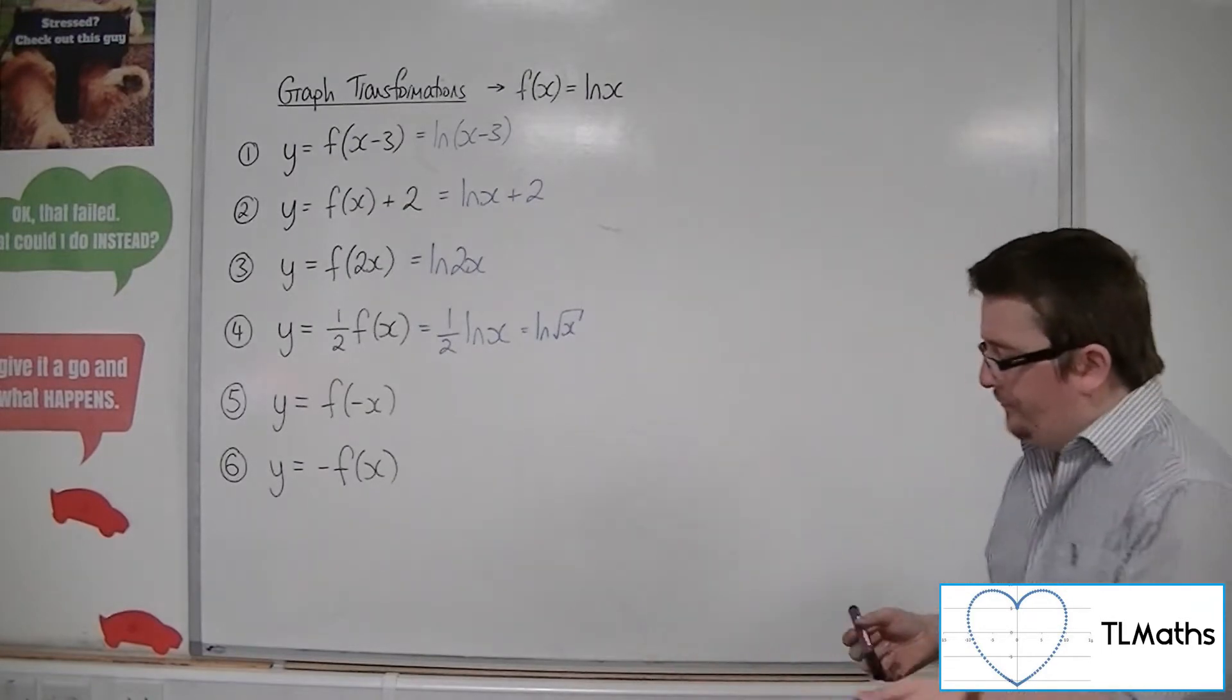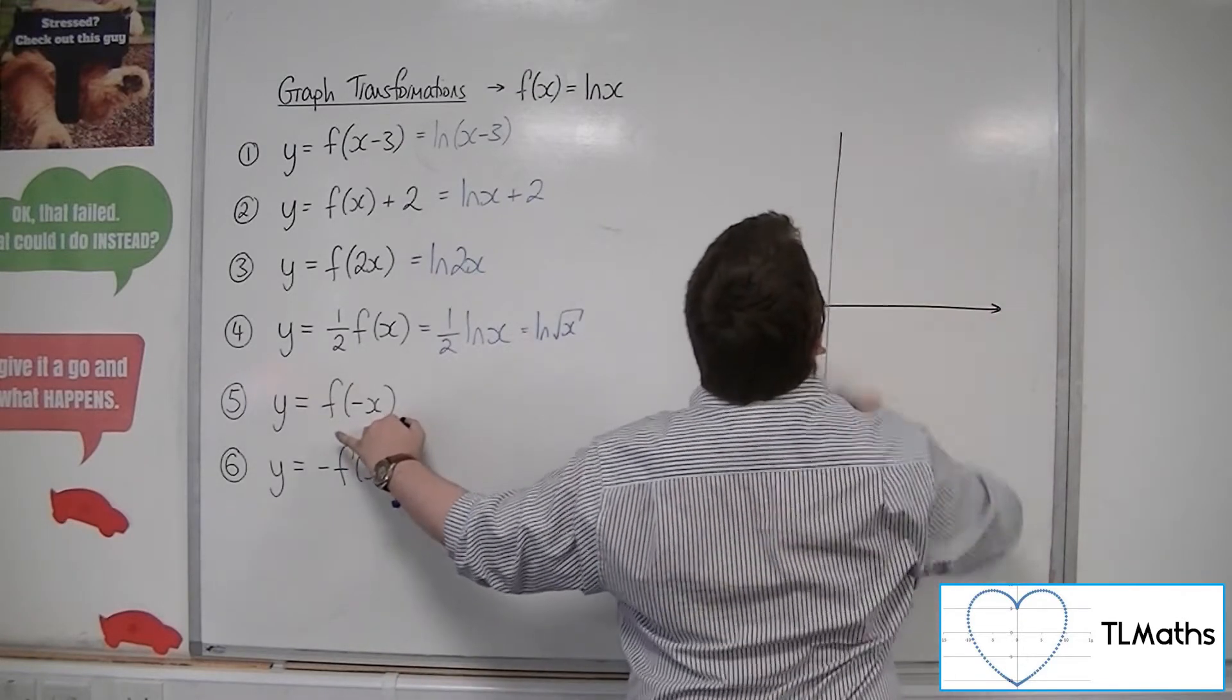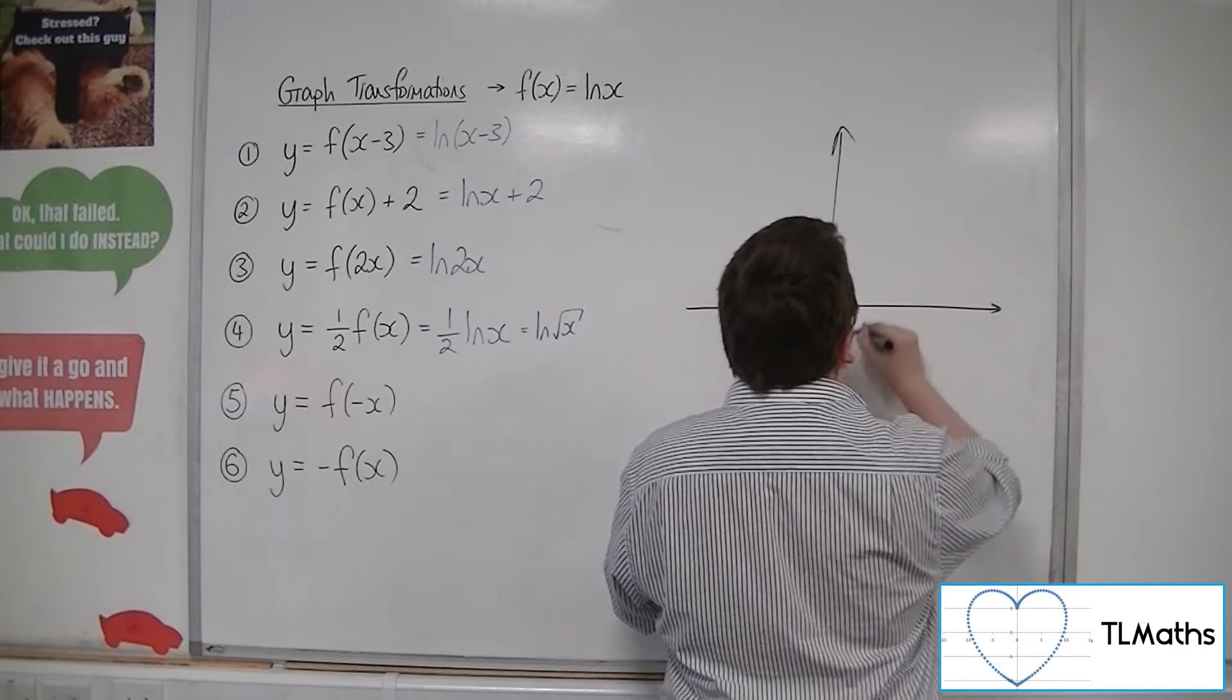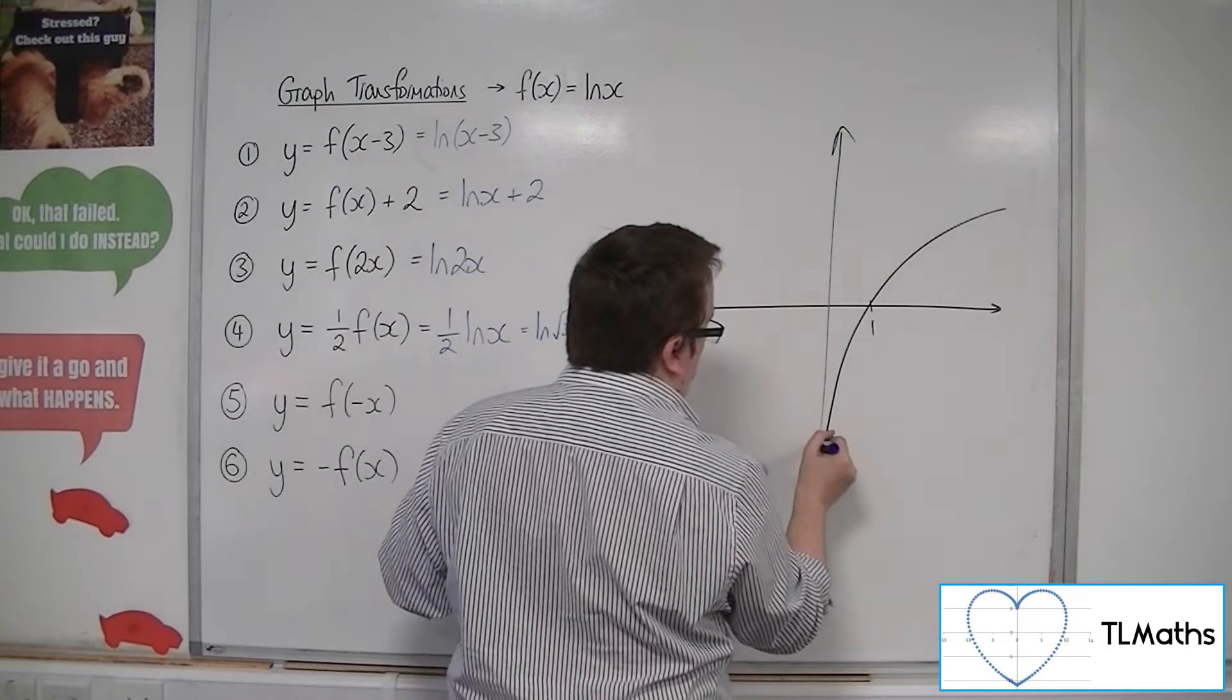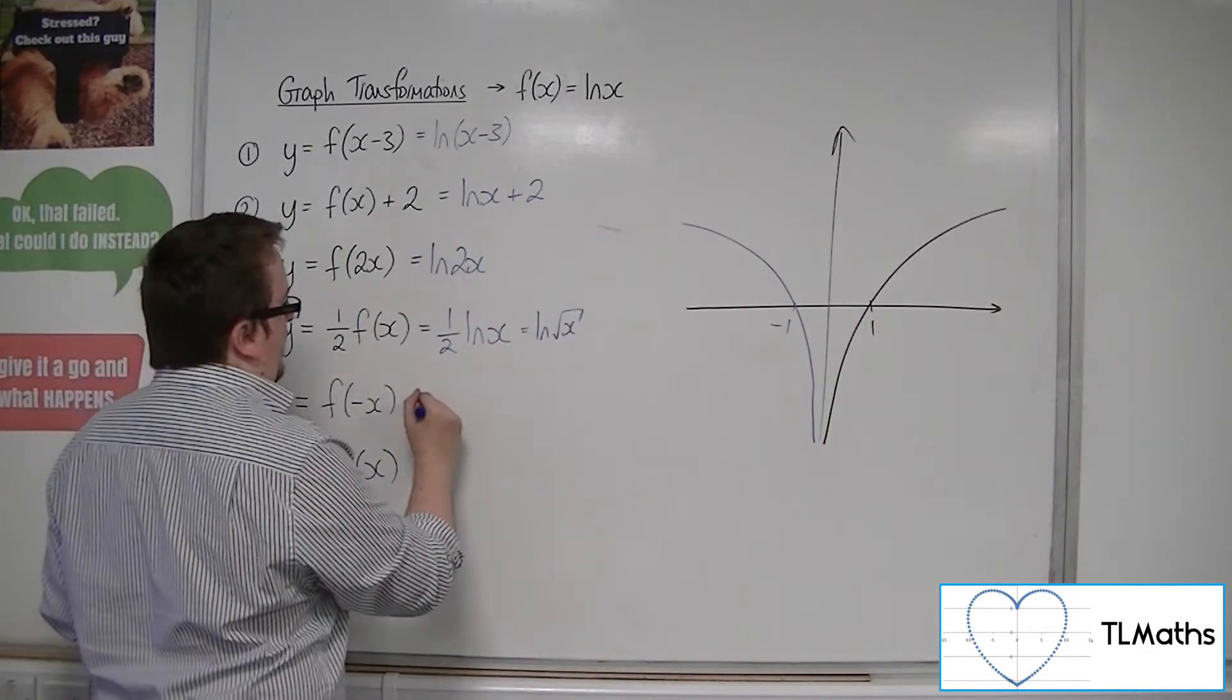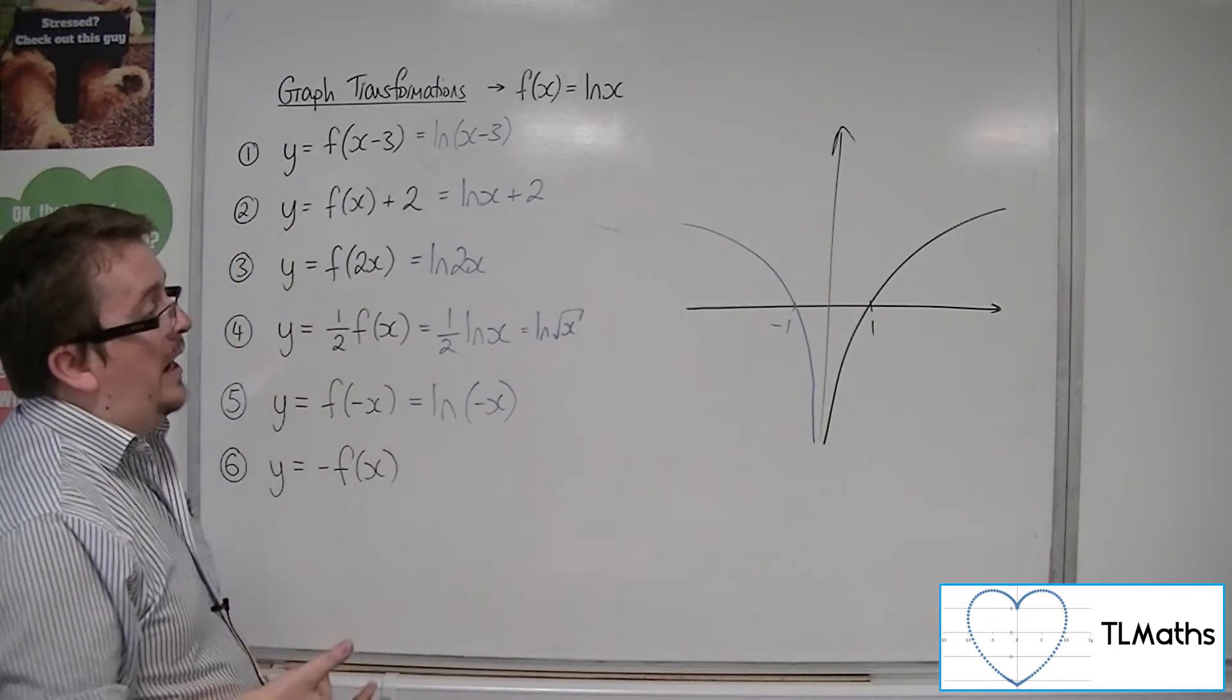So f(-x), so a reflection in the y-axis. Here's my original curve. So our new curve will look like this, going through minus 1. So this is ln(-x). And that's how we would sketch it.